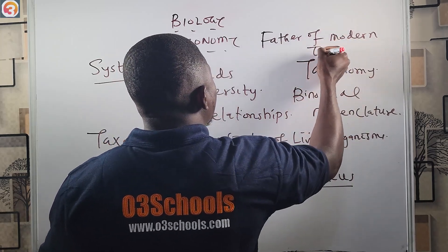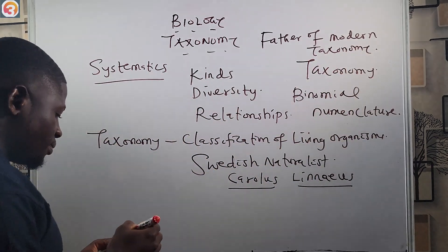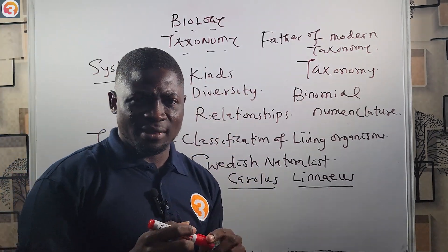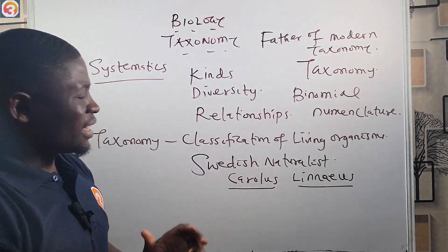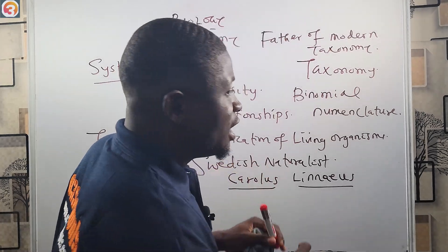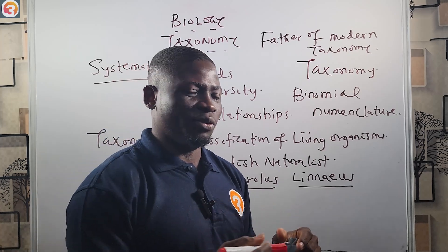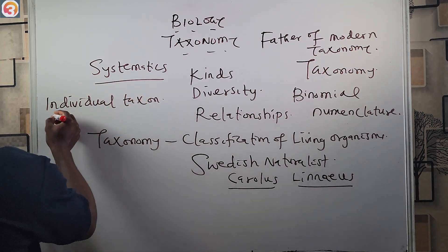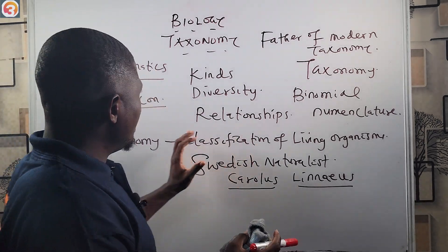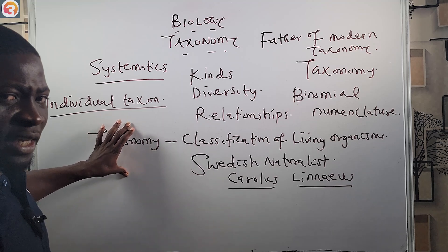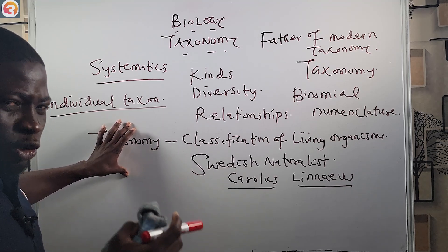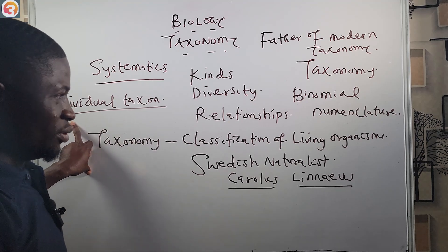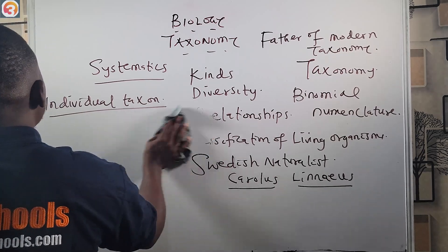The basic taxonomy of living organisms is classified under eight different hierarchies. Each level or hierarchy is known as an individual taxon.